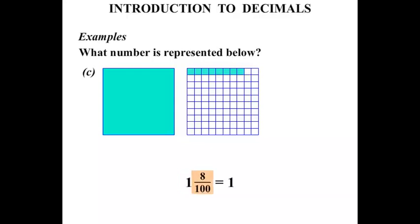The way we're going to write that, we put our one down. And the eight hundredths, we're going to write as 0.08. 0.08. Again, we've got over 100. Expect two decimal places.